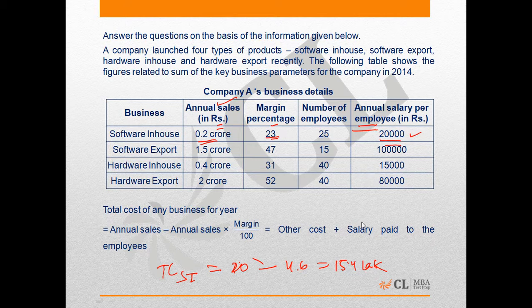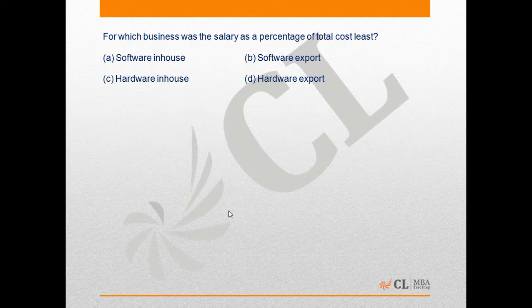Using the other cost plus salary paid to employees, we can calculate other costs. In the first question, it is asking: for which business was the salary as a percentage of total cost the least? We have to find the total cost for the four products and then check for which one the salary as a percentage of total cost is the least.